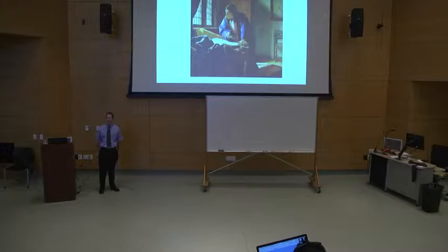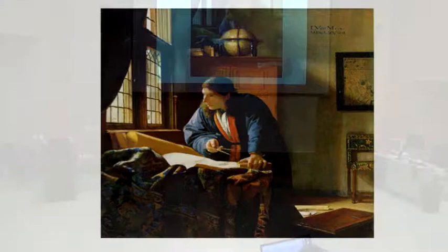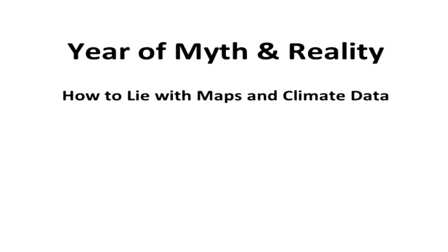All right, I think we're ready to go. There are a couple of pieces of paper going around, so if you're in one of my classes and you're supposed to get credit for showing up, make sure your name is on a piece of paper. I know this artwork from here — it's called 'The Geographer.' I thought it was appropriate for this talk; you can see he's painting maps and a globe. So every year on campus we have a theme, and this year our theme is 'Myth and Reality.' The title of my talk is 'How to Lie with Maps and Climate Data.'